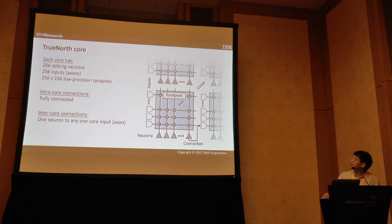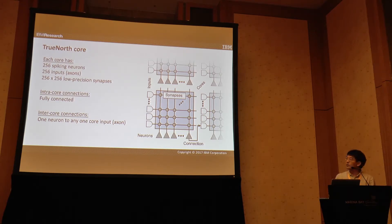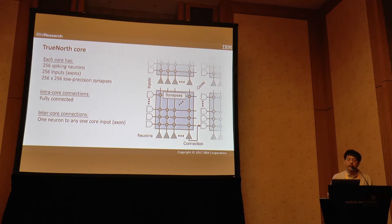Looking more closely at a TrueNorth core: each core has 256 spiking binary neurons, 256 input lines, and every input line can go to every single neuron in the core. So there are 256 by 256 low-precision synapses. You can have full connectivity within a core, but any neuron can go to only one input on a different core — one-to-one connectivity between cores.